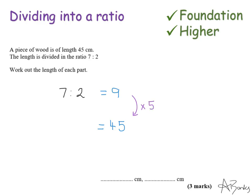So if I multiply my ratio by 5, so 7 times 5 is 35 and 2 times 5 is 10, that gives me my answer straight away. So 35 and 10 are in the ratio 7 to 2 and they add to make 45. So my 2 lengths of wood are 35 and 10.